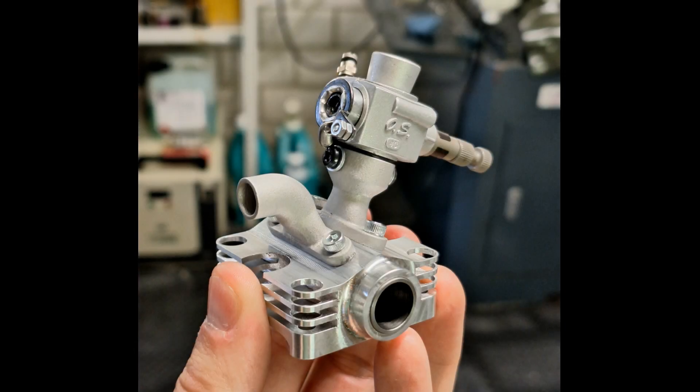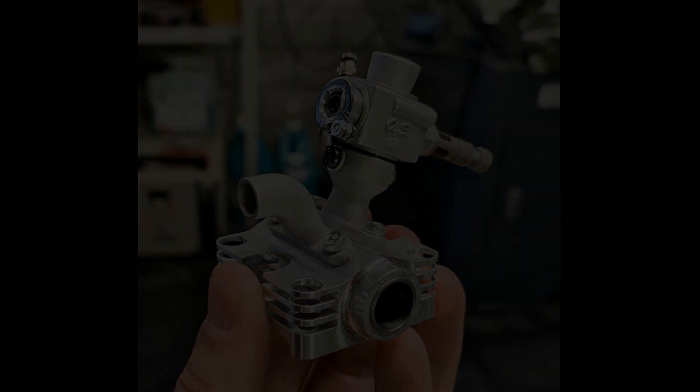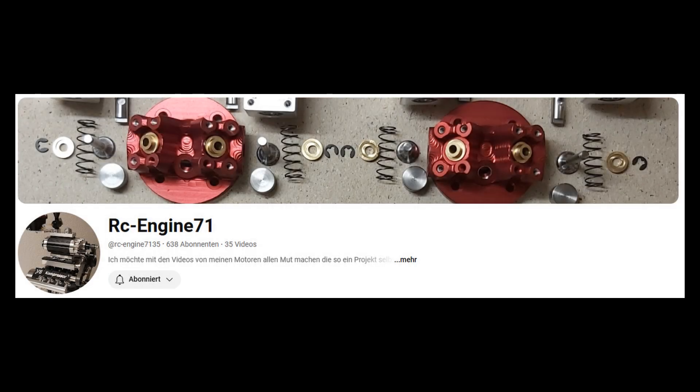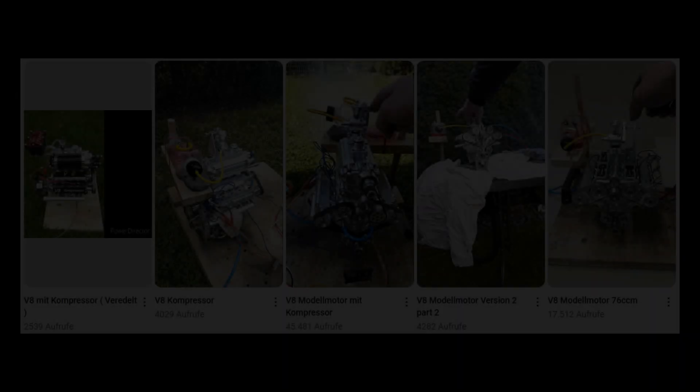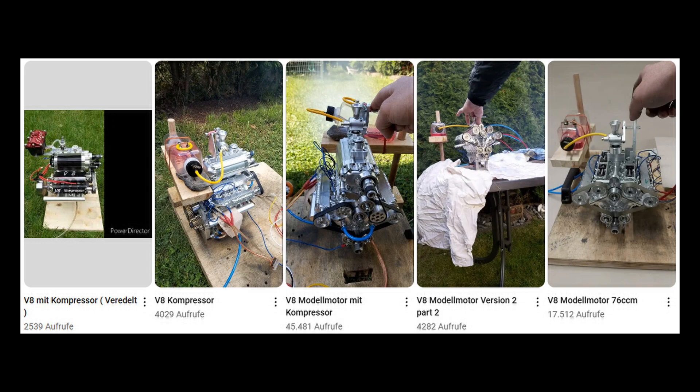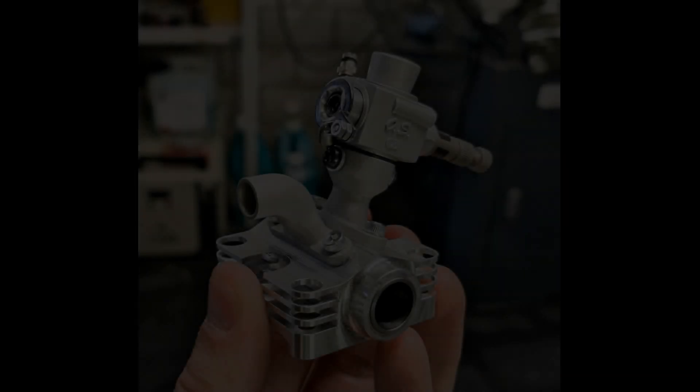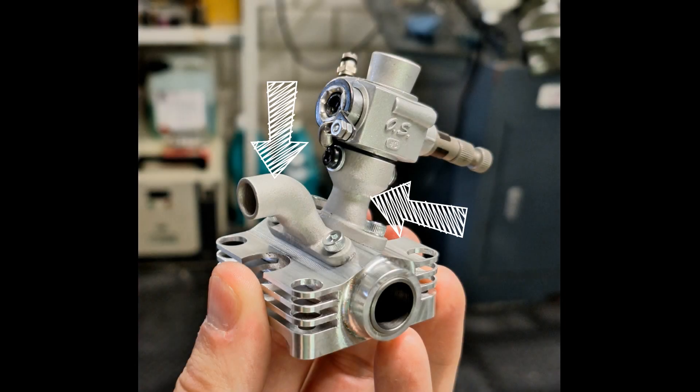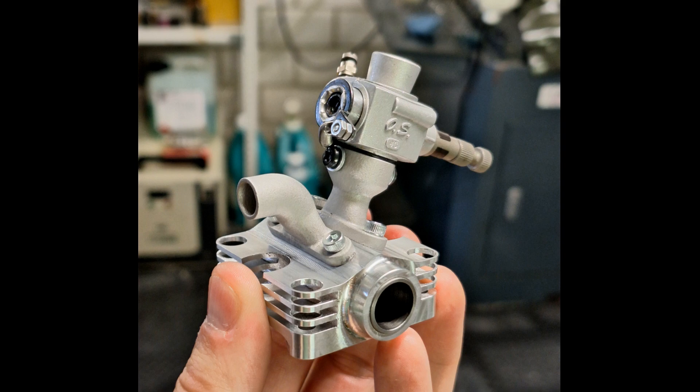Here you can see the finished cylinder head. This was CNC milled from 7075 aluminum. At this point, a big thank you to RC Engine 71. He milled the head for me. Have a look at his channel, he also builds great model engines. Link in the description.